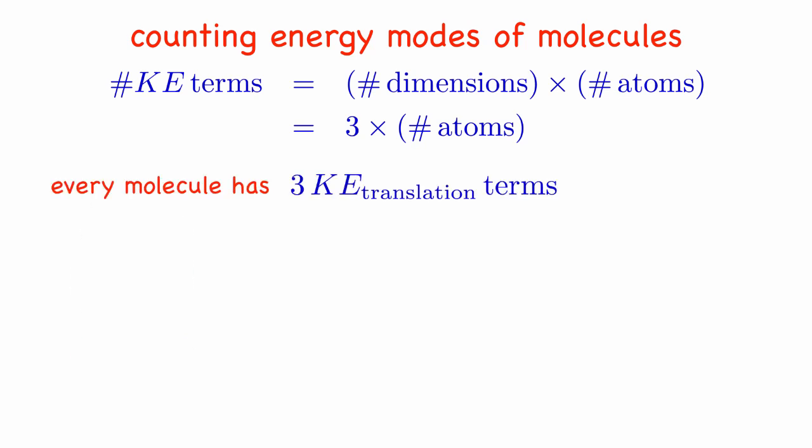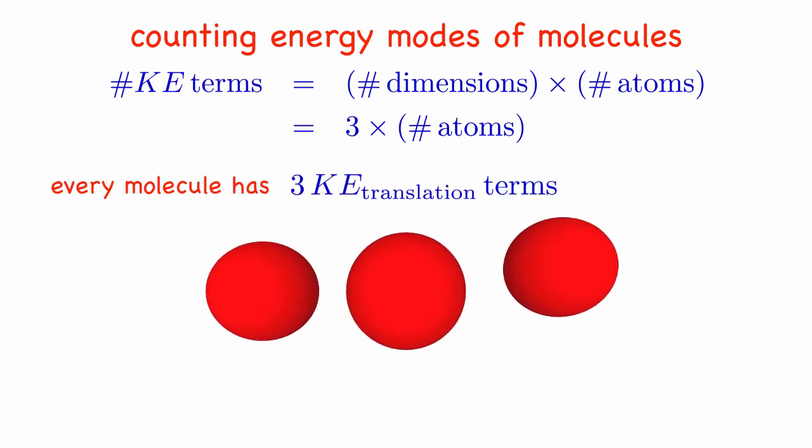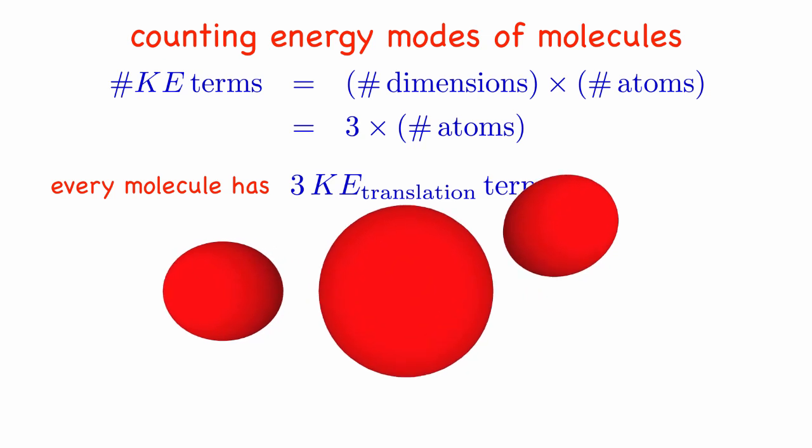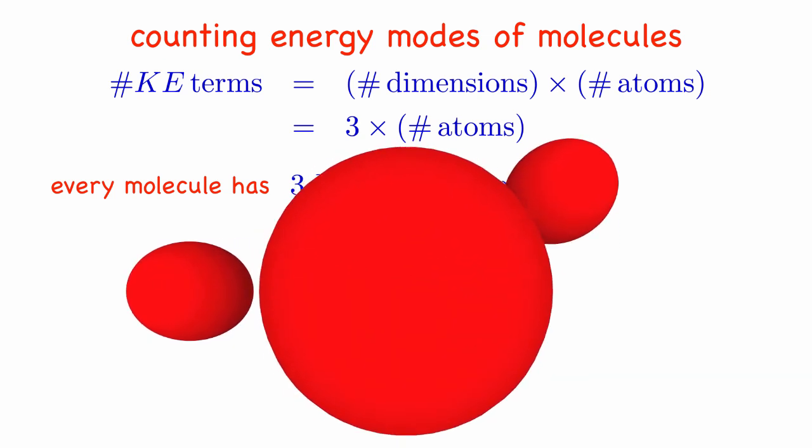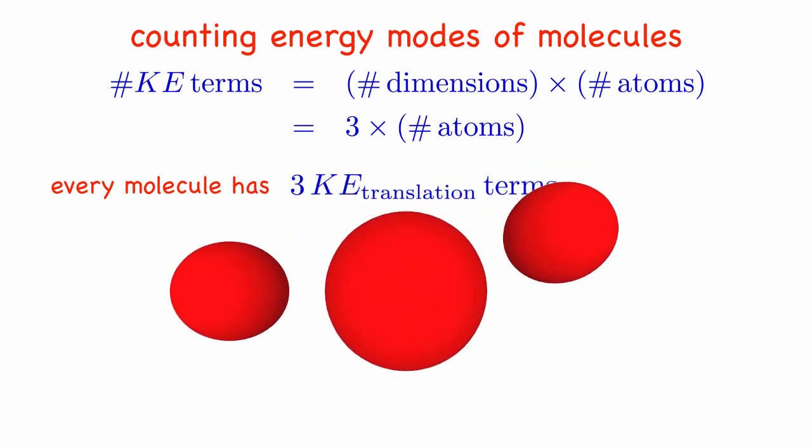Now we can group the kinetic energy terms into three types. Since the molecule can move as a single object in three dimensions, there are three kinetic terms for translational motion.